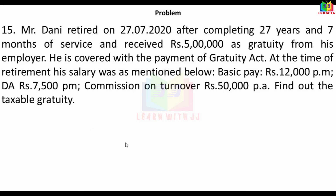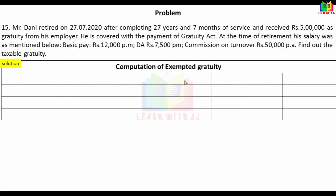Additional salary details: commission on turnover Rs. 50,000 per annum. We need to find out the taxable gratuity. The gratuity received is Rs. 5,00,000. The exemption limit under the Payment of Gratuity Act is Rs. 20,00,000 maximum. We take the least of three conditions: actual gratuity received, maximum limit, and 15 days' last drawn salary.